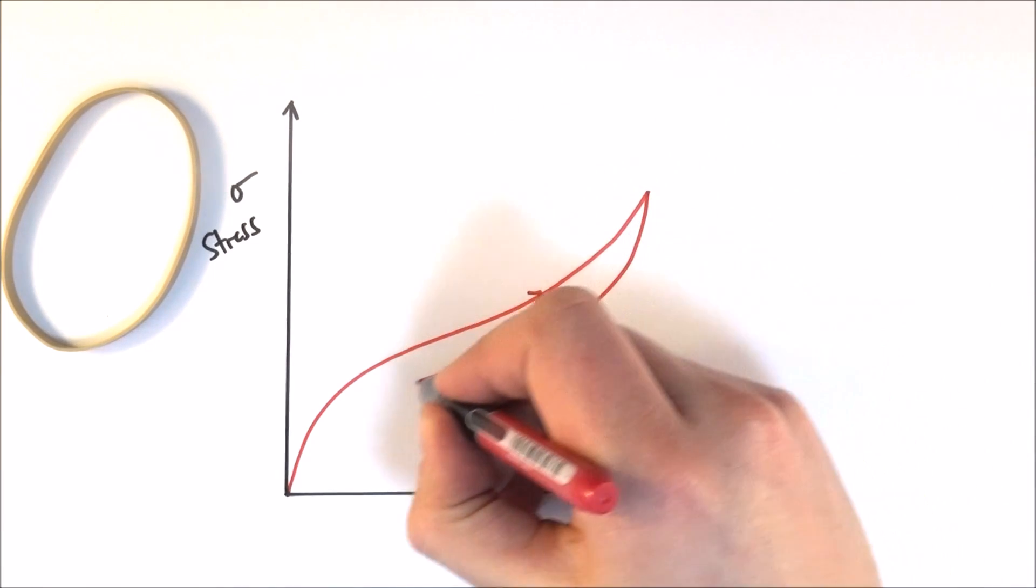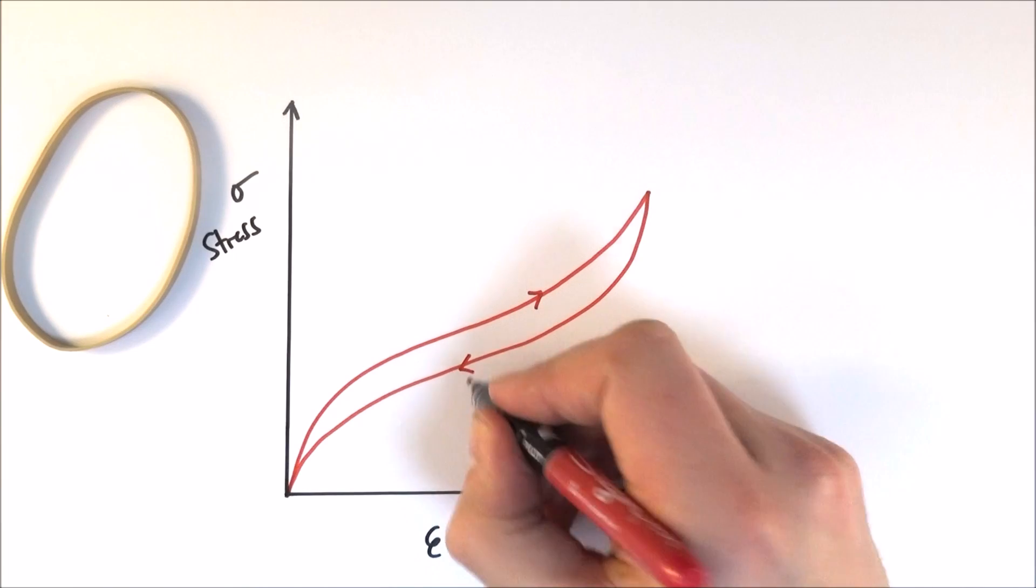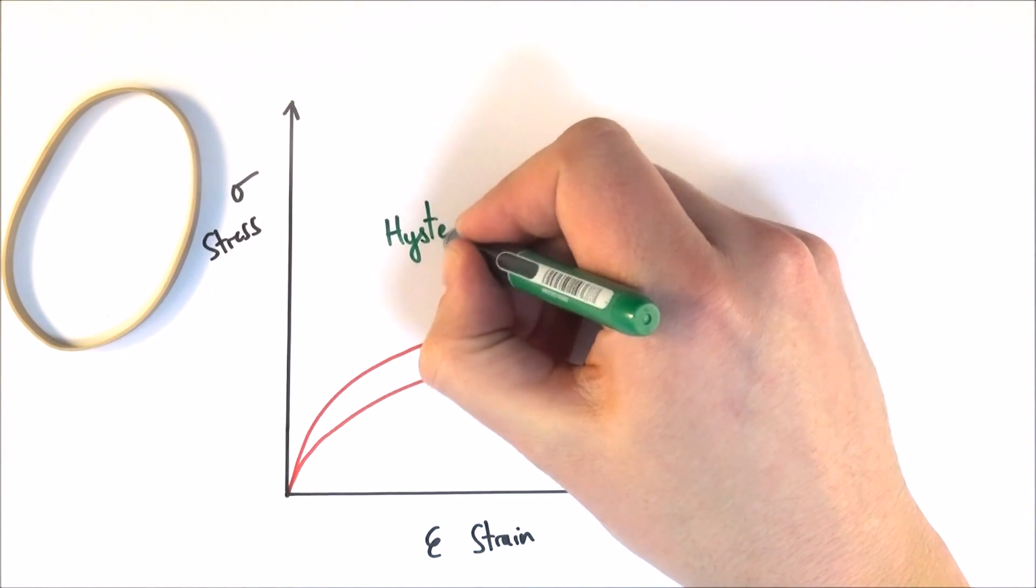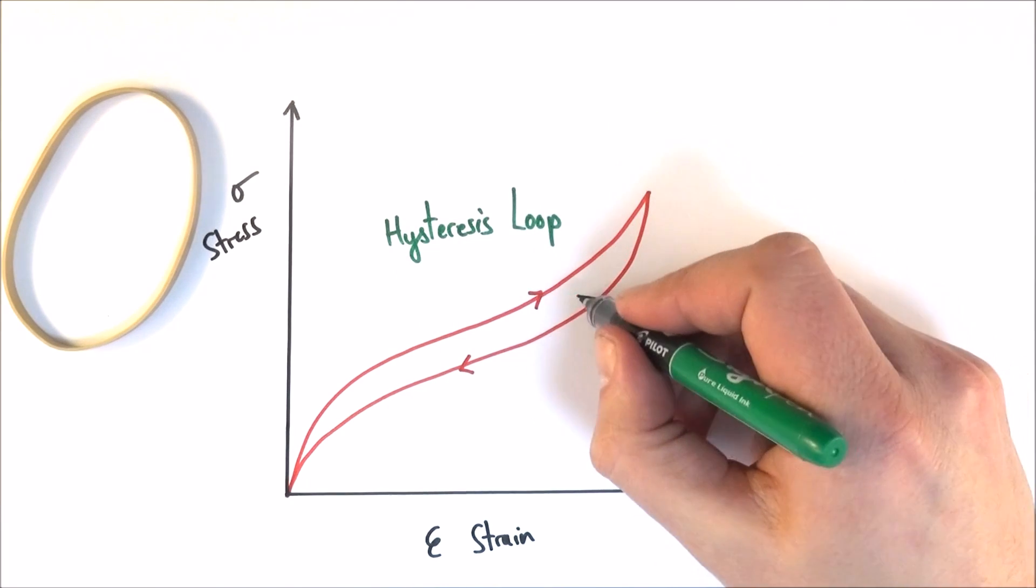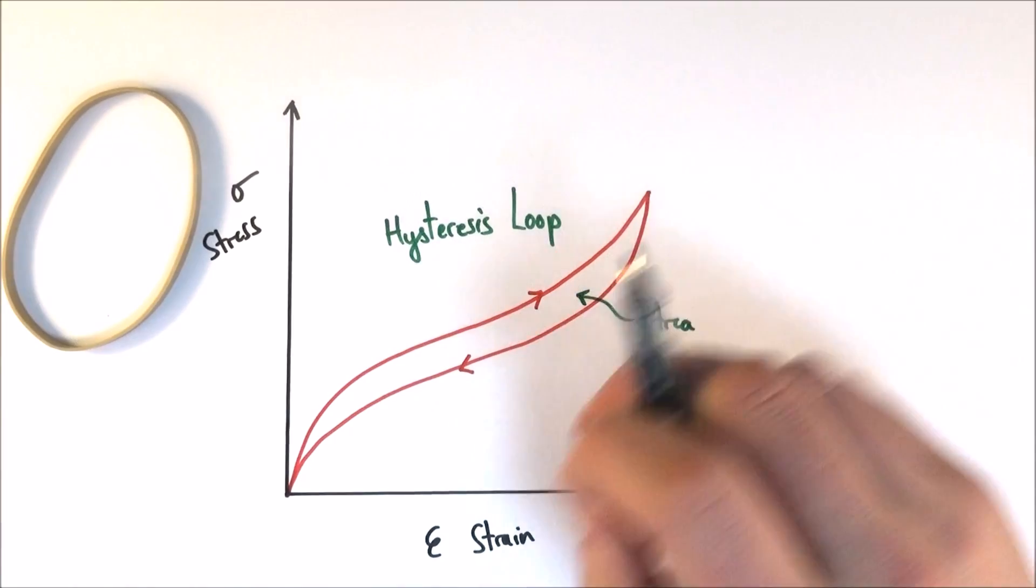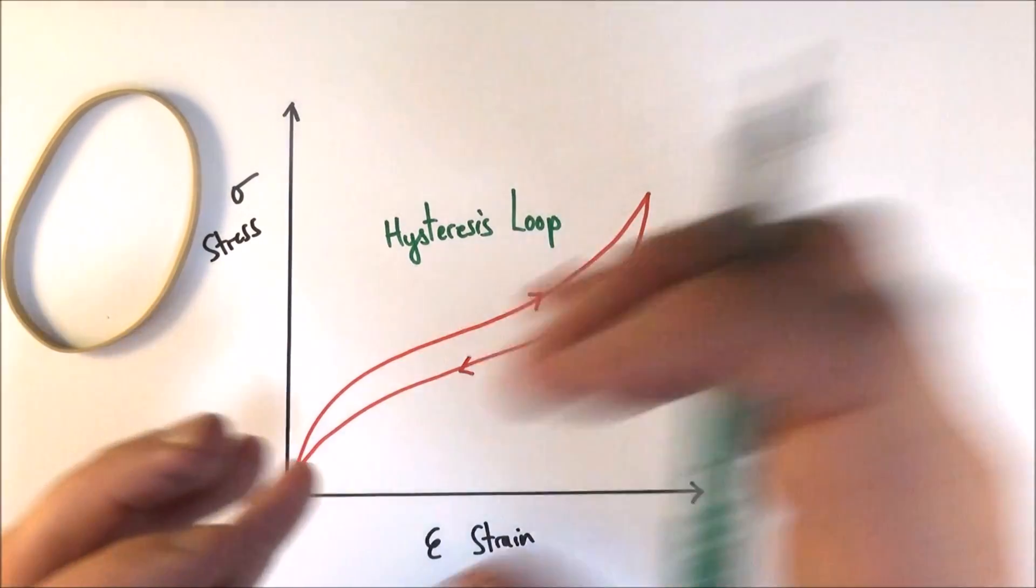However, as we take the masses off what we find is it follows a curve a bit like this. Now this is called a hysteresis loop, and the area inside this is equal to the energy stored per unit volume as you're actually pulling that rubber and then letting it go again.